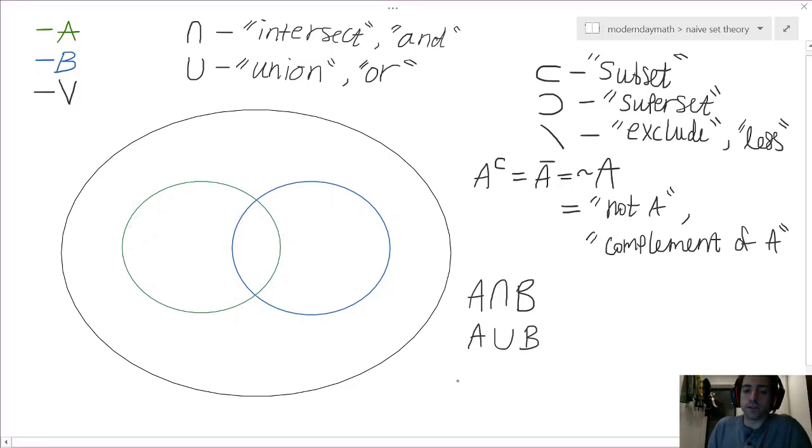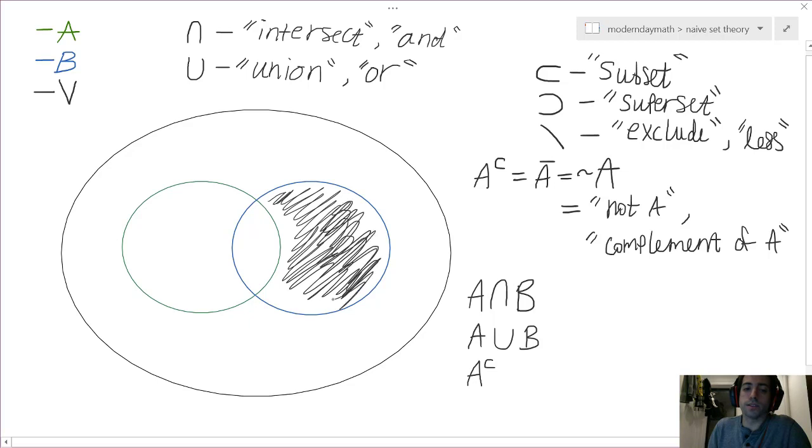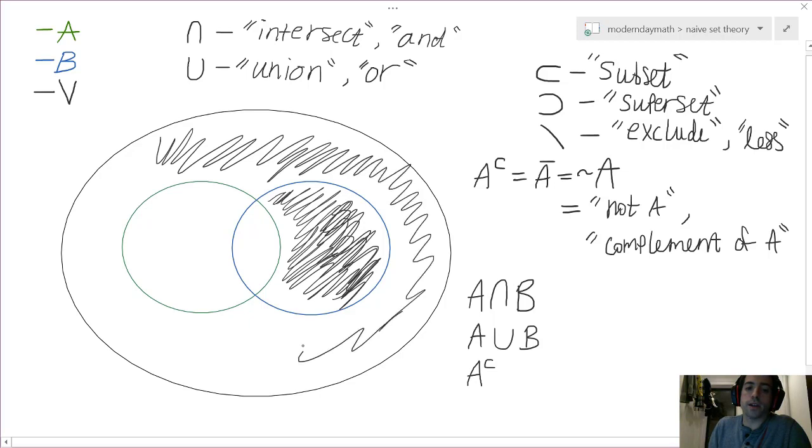Alright, so now, if we want to talk about the complement of A, we're going to be dealing with all elements that are not within this set, that are not within A. So, we'll be dealing with all of the elements in B that are not shared with A. So, we ignore the intersection between the two sets. And we're going to deal with all elements that are not in A or B.